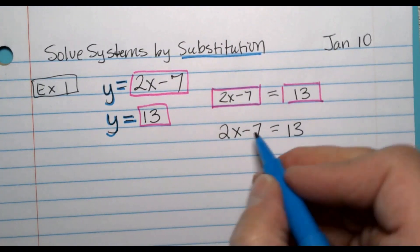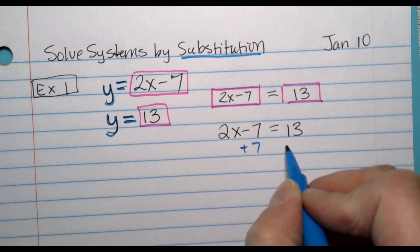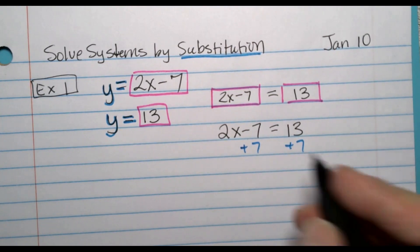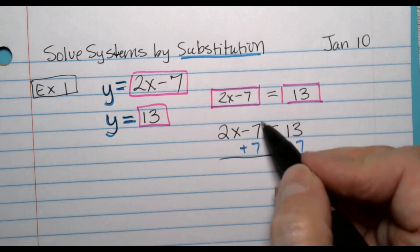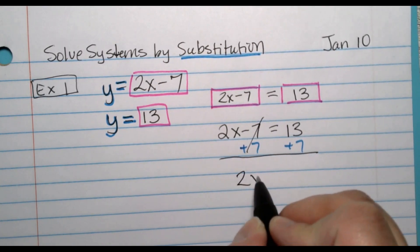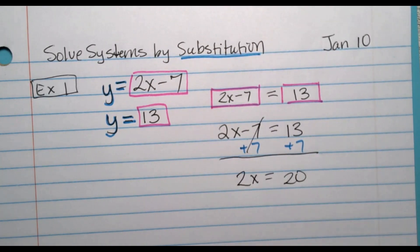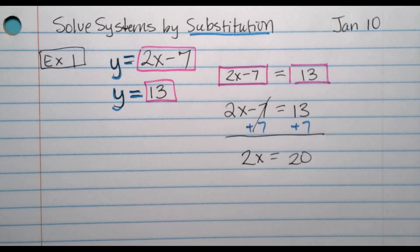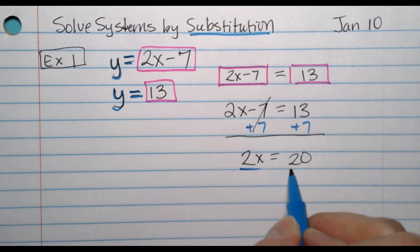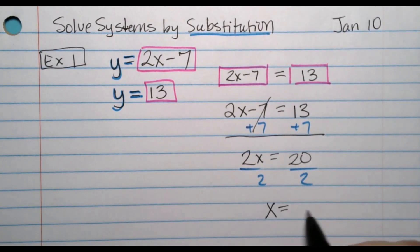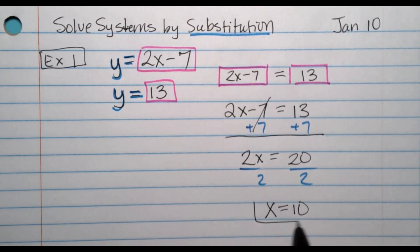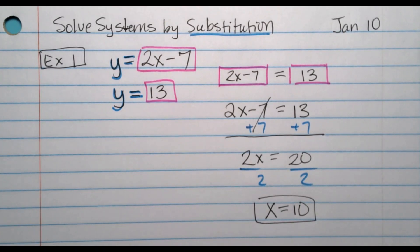So I go 2x minus 7 equals 13. That's how I set up the equation. Once you have this set up, you just solve the equation like we know how to solve. This is the new part where you set the two things equal to each other. Then from here, I'm going to add that 7 to both sides. The 7s cancel. We get 2x equals 20. Divide both sides by 2.